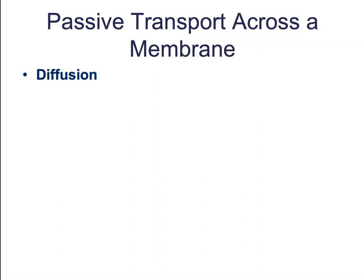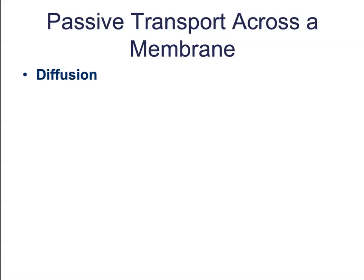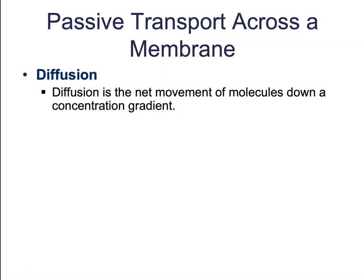Diffusion is simply the net movement of molecules down their concentration gradient — the movement from an area of high concentration to an area of low concentration. This continues until equilibrium is reached and the molecules are evenly distributed.